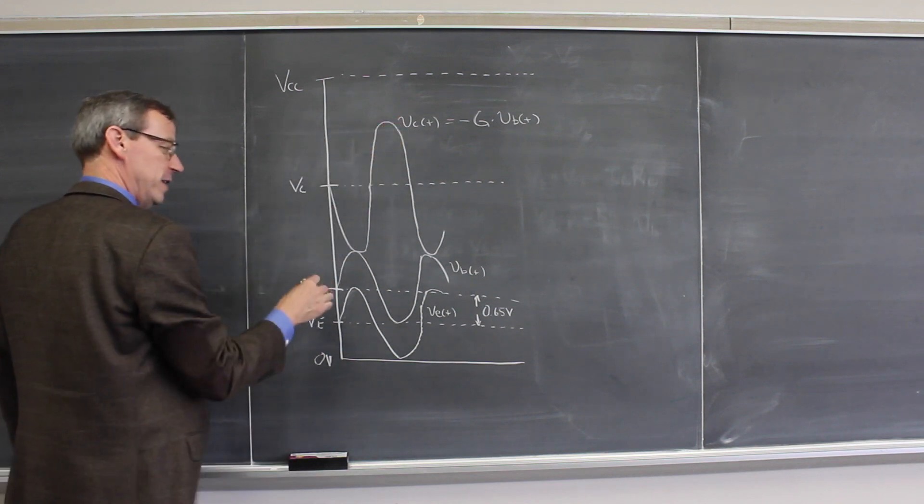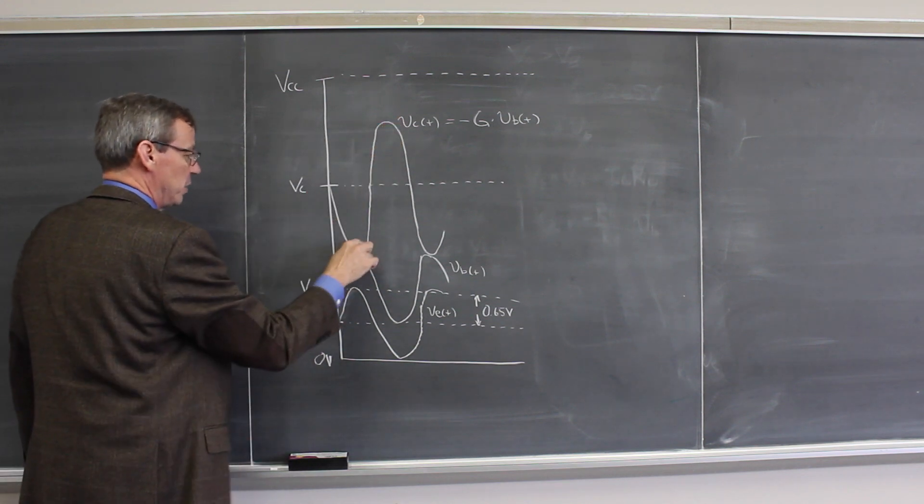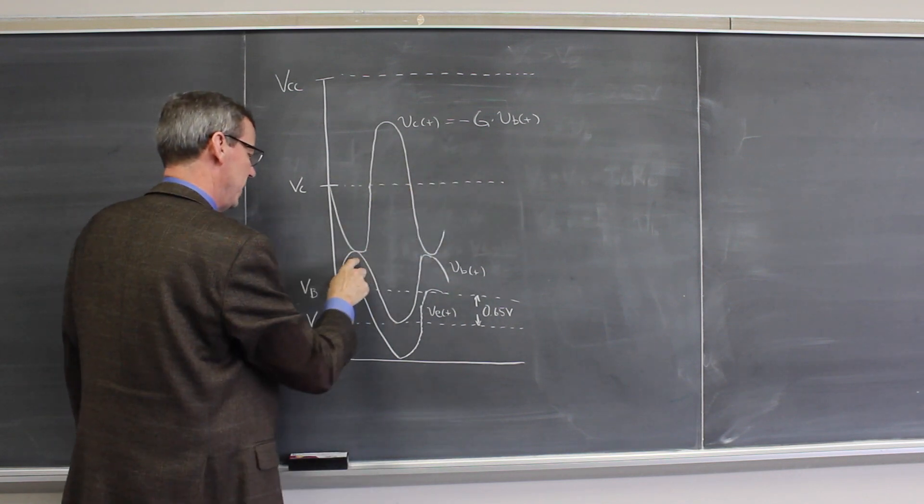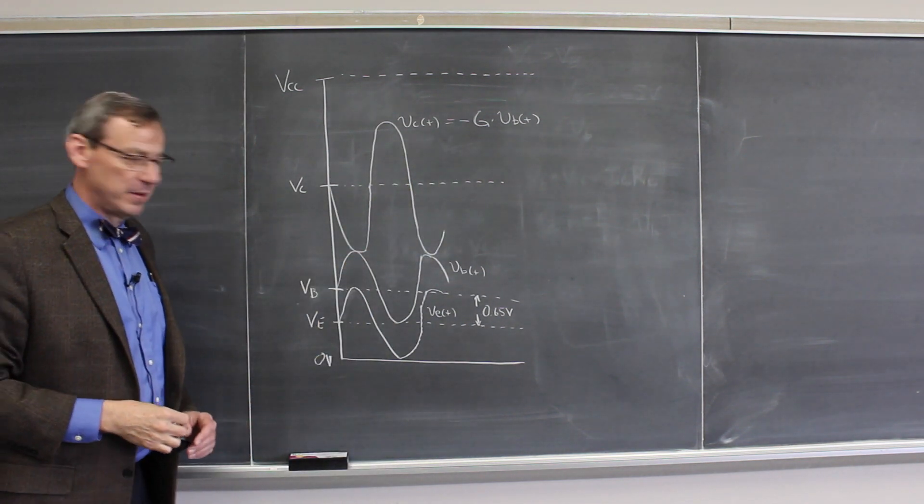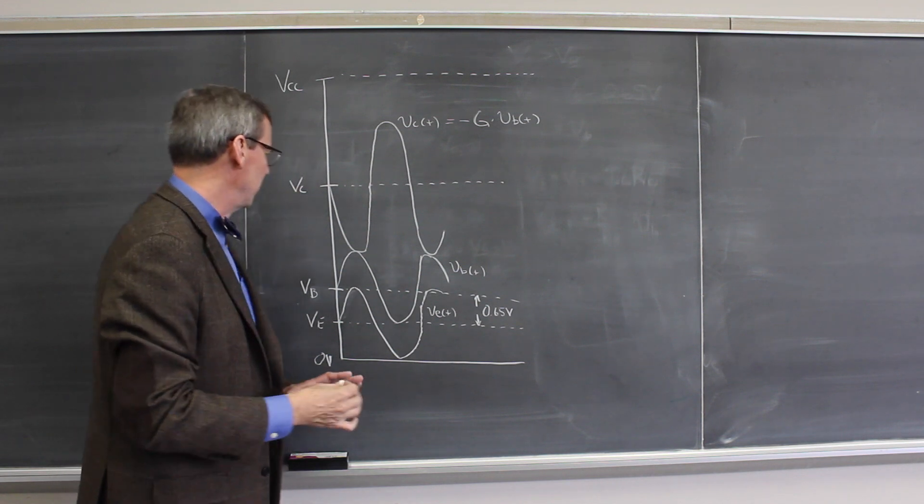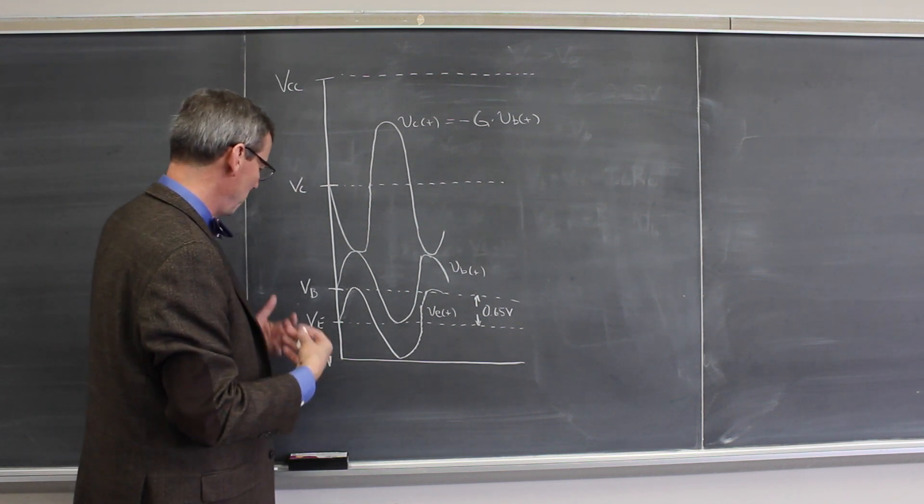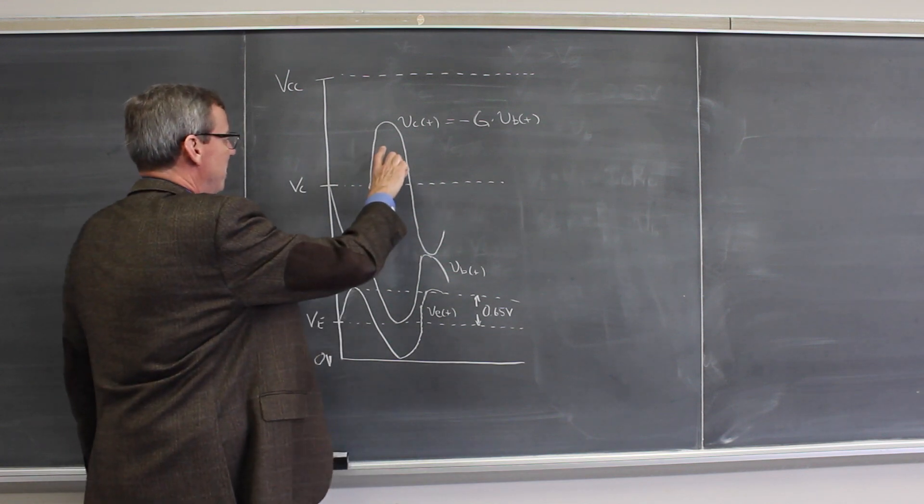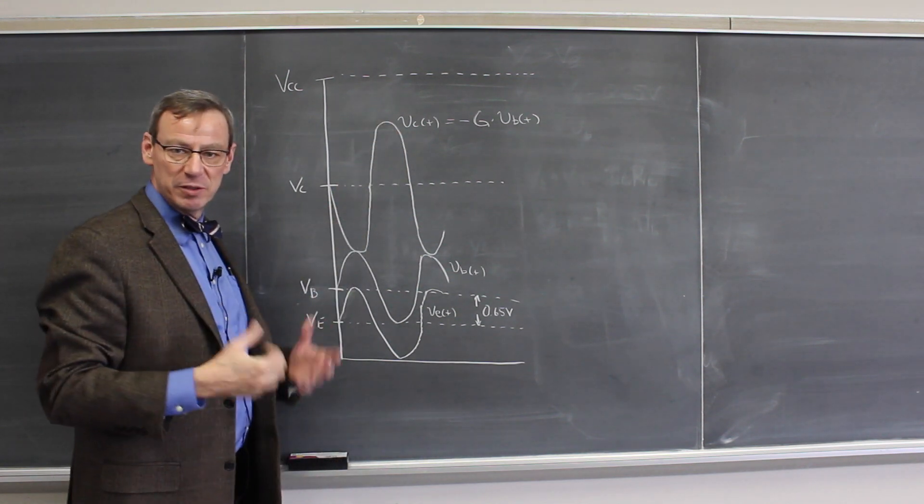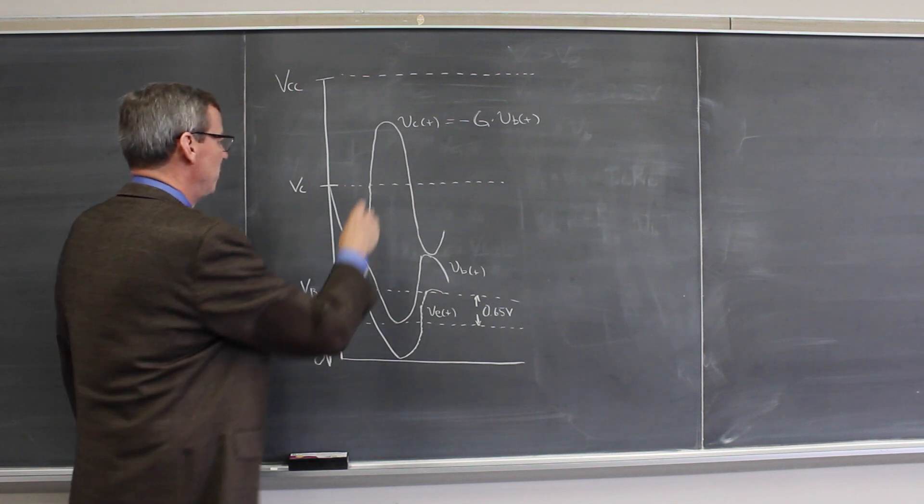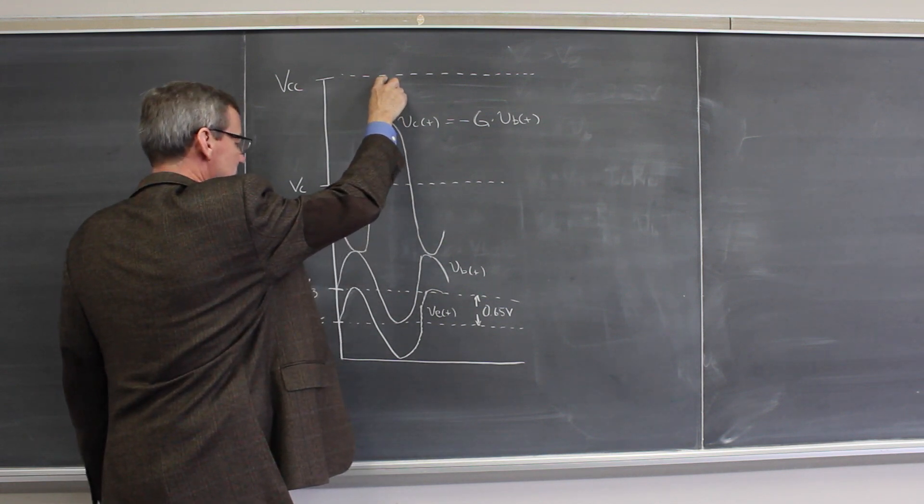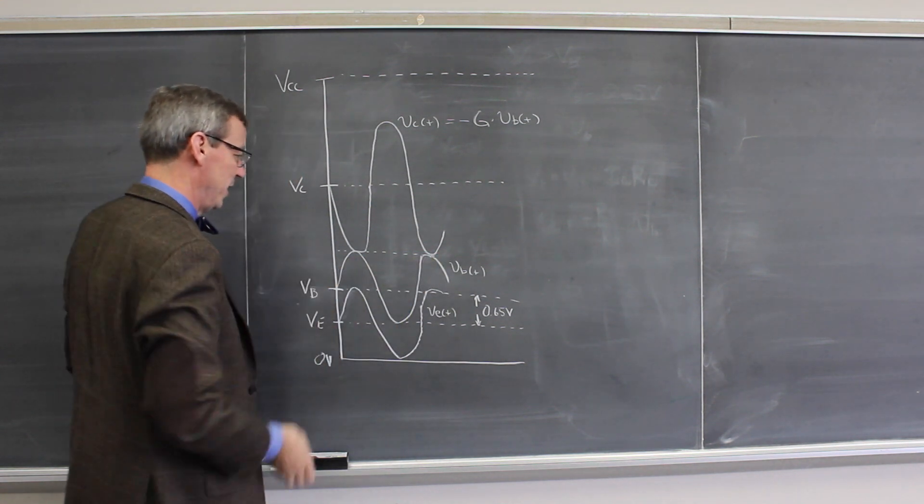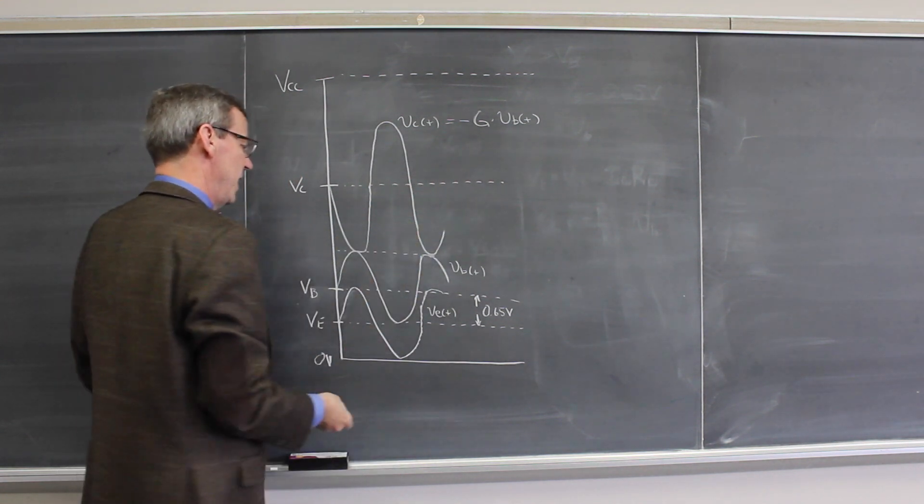The collector is inverted, so when this is going up it's going down and it looks something like this. Its amplitude is the gain times the amplitude of this. And now what we need to do is try to figure out where do we want to put these DC levels to be able to have the maximum output range or maximum output signal. We'd really like this to go from here all the way down to just touching the base voltage, and we'd like that to be as big as possible.